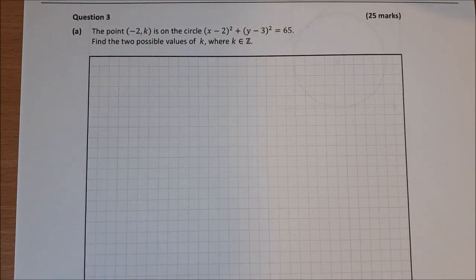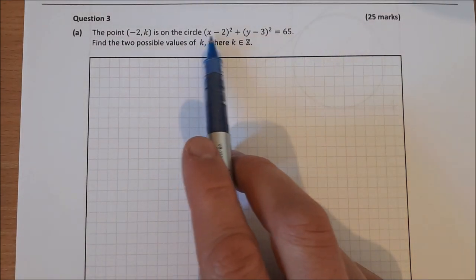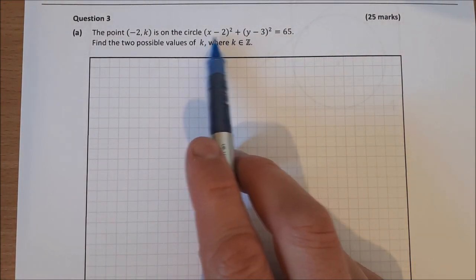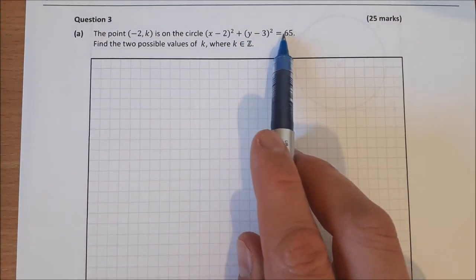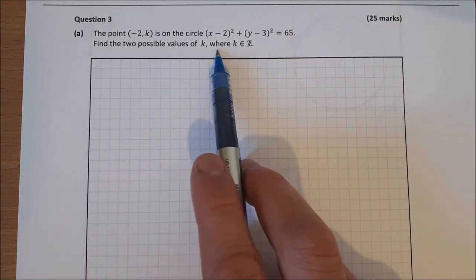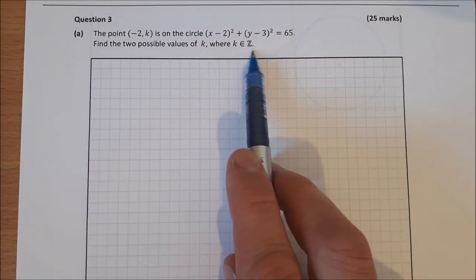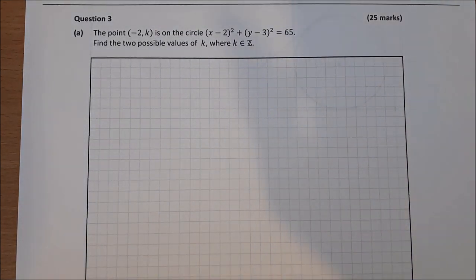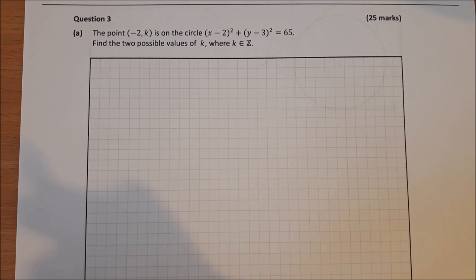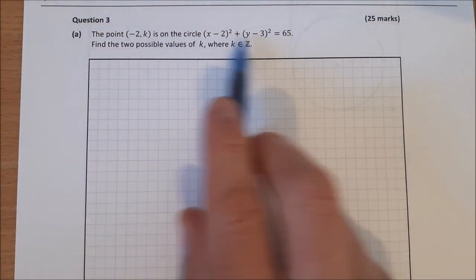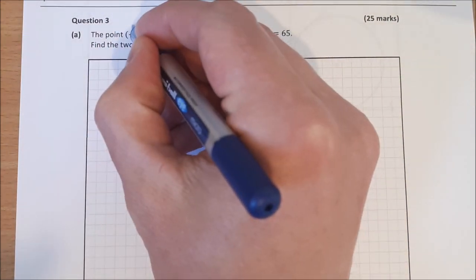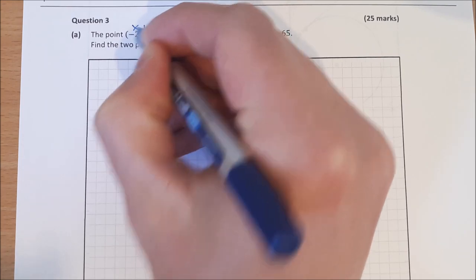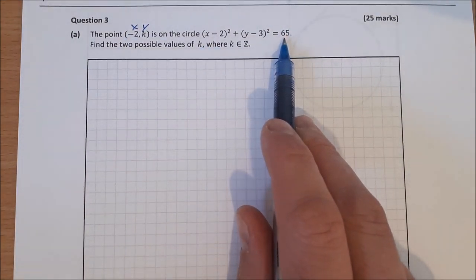First question: the point (−2, k) is on the circle (x − 2)² + (y − 3)² = 65. Find the two possible values of k where k is an element of ℤ. If we have a point on the circle, we can substitute in for x and for y.